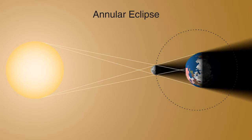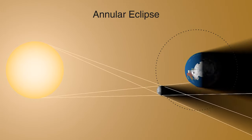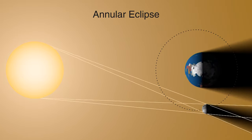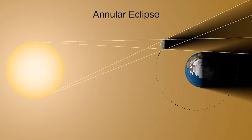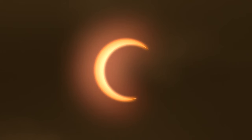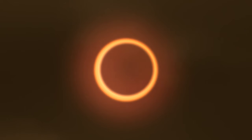It just so happens, by an amazing cosmic coincidence, that when the moon is closer to the Earth, it is big enough to almost exactly cover the sun. And when it's a little further away from us, it's just not quite big enough to cover the sun. So an annular eclipse is kind of a failed total eclipse when the moon passes directly in front of the sun, but it's just a little smaller than the solar disk. If you're standing at the center of that path, you'll see what's sometimes called a ring of fire where the sun is left behind the moon.